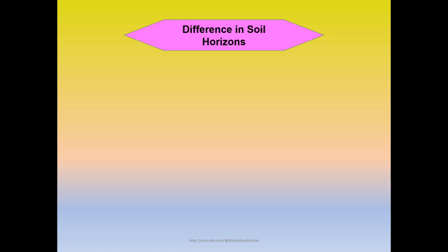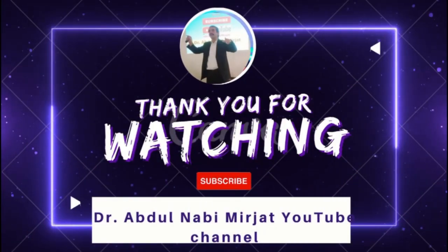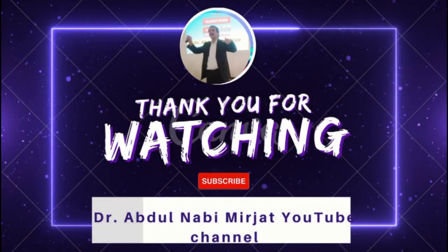Differences in soil horizons: Soil horizons can be differentiated based on thickness, chemical constituents (meaning organic and inorganic material), aeration, color, texture, and water relations. I'll see you next time.